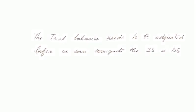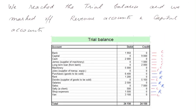The trial balance needs to be adjusted before we can compute the income statement and the balance sheet. We reached the trial balance and marked off revenue accounts and capital accounts. The C's correspond to capital accounts and the R's to revenue accounts — they are the sales and the other charges. Altogether, as we said, they will form the income statement.